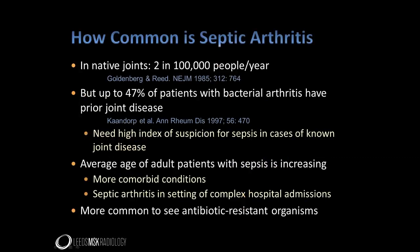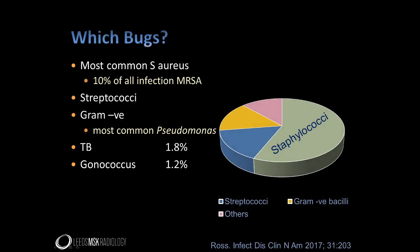Joint sepsis is becoming more common and affecting an increasing elderly population, in part as a result of the comorbidities and the often complex hospital admissions these patients have. Another problem is the increased frequency with which we are seeing infection with antibiotic-resistant organisms. By far and away, the most common organism involved in adult joint sepsis is staphylococcus, and antibiotic-resistant strains are an increasing problem.